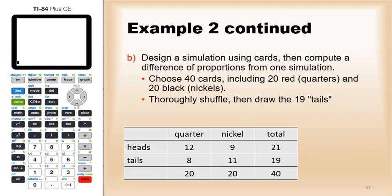Now how can we design a simulation using cards? We start off by looking at the overall total. There are 40 total coin flips. I want to start with 40 cards: 20 quarters and 20 nickels, so I can make it 20 red and 20 black. Thoroughly shuffle them, and then draw my row totals. I'll take the smaller one, the 19 tails.